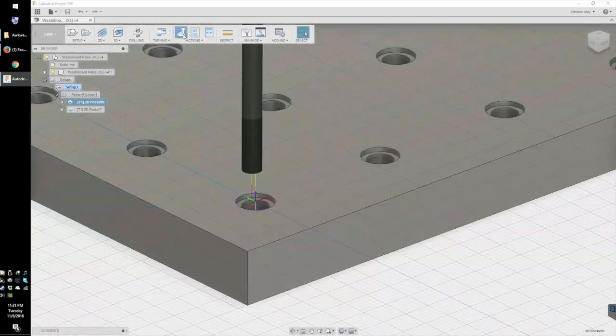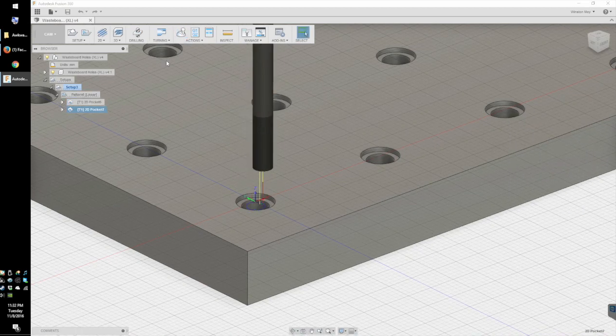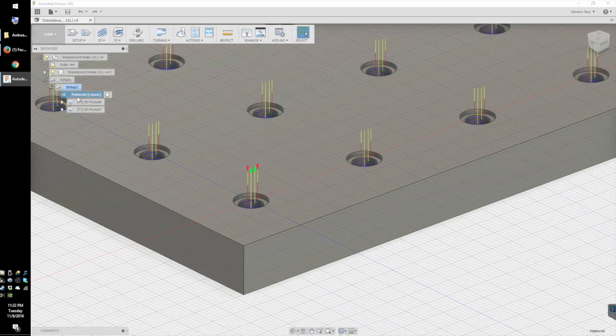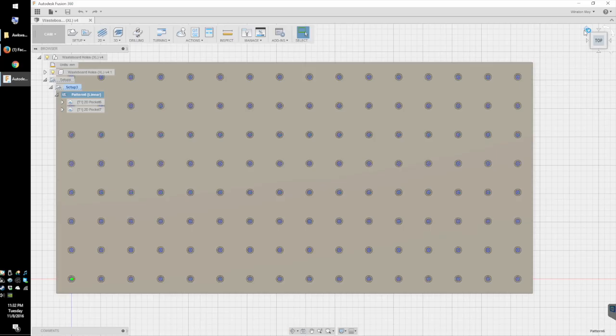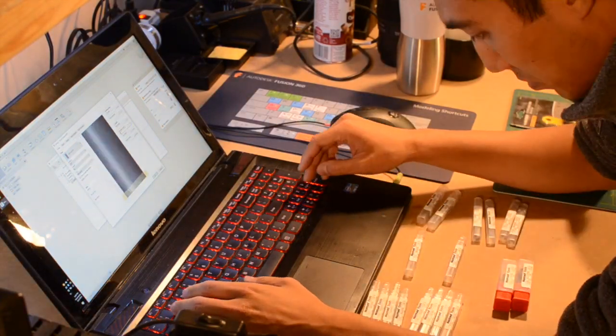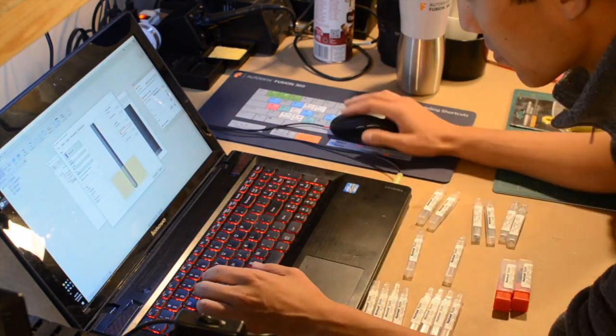Using Fusion 360, I sketched up a single countersunk hole, created a toolpath for it, and then duplicated it in a rectangular grid with 2 inch spacing. And actually, before I did that, I set up a tool library with Carbide 3D's complete selection of cutters.